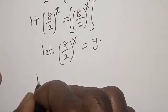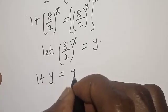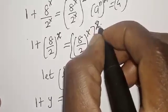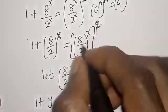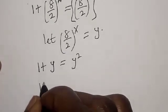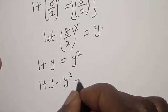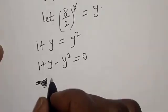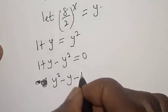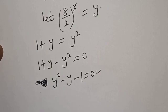Now we have 1 plus y is equal to y squared. Rearranging: y squared minus y minus 1 is equal to 0. This is a quadratic equation.